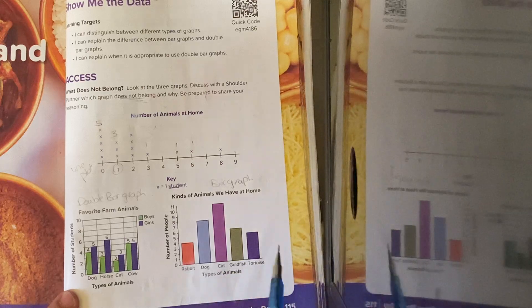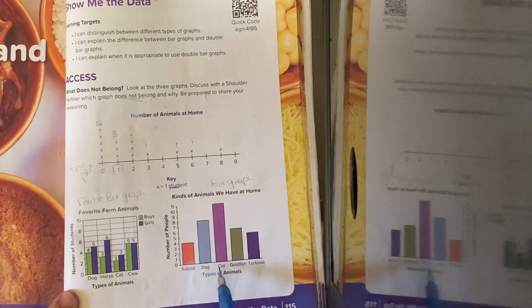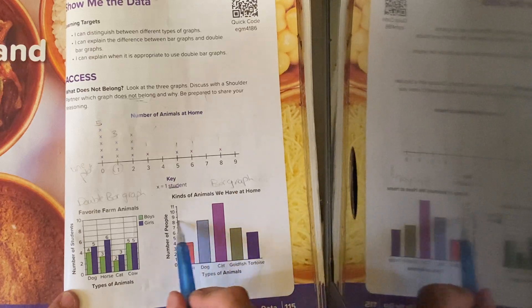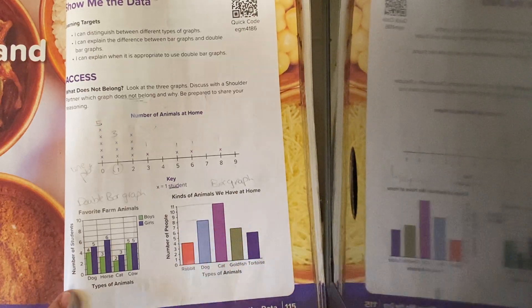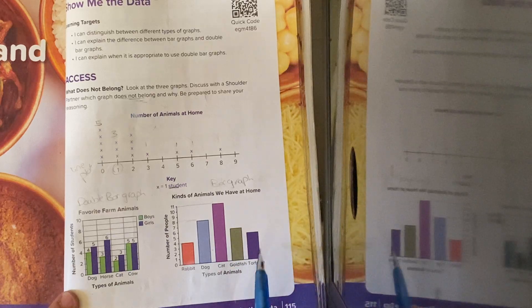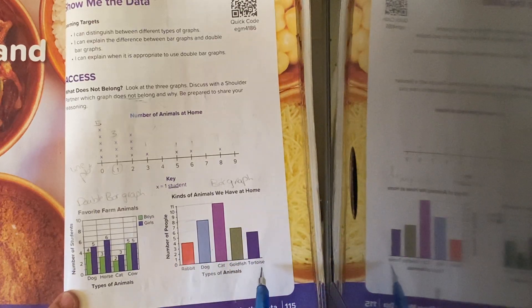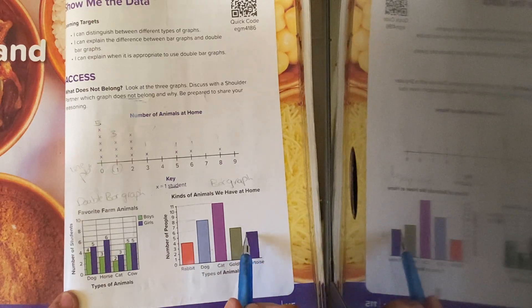it's talking about types of animals we have at home. Rabbits, they are 4. Dogs, they are 8. Cats, they are 11. Goldfish, they are 6. And tortoise, they are 5.